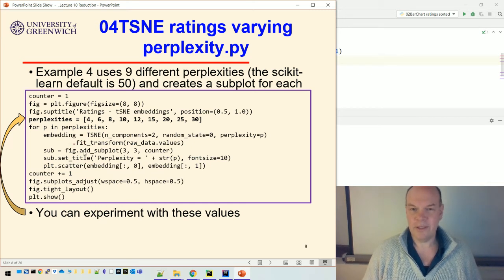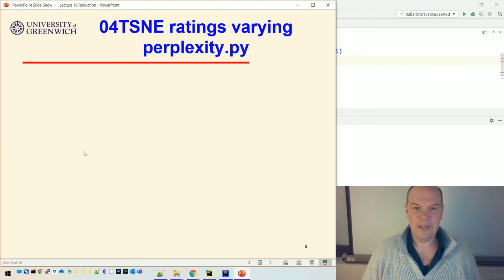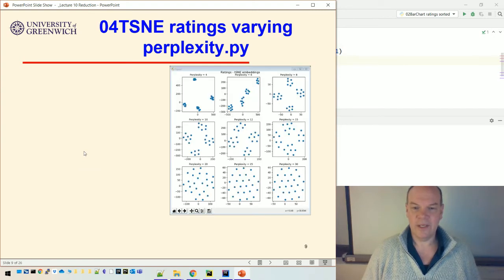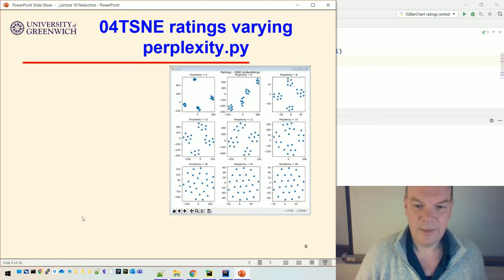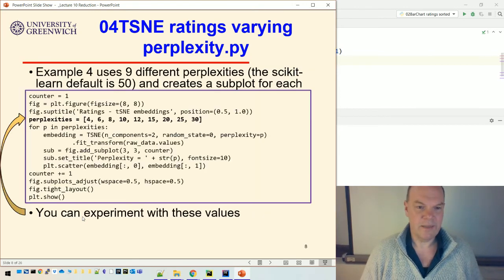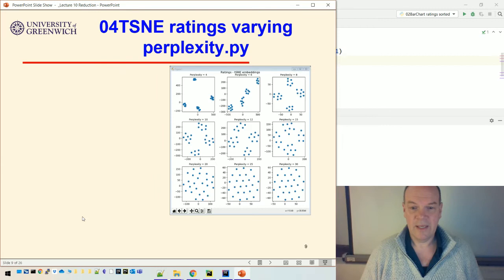And then I put those each in a subplot. Okay. So when I run that, this is what it looks like. And you can see, so the minimum I've got perplexity is 4 and the maximum is 30. And you can see, by the time these ones down the bottom here are perplexity 20, 25, 30, they're just spreading the data out across the two-dimensional plane. So they're not really telling us anything about the structure. These ones are a bit more useful.